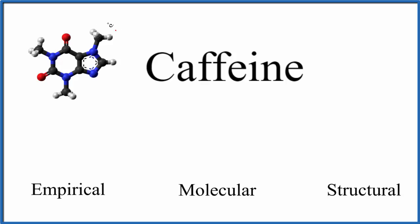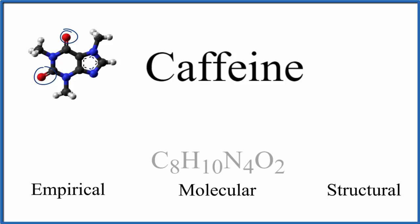Here's a model of the caffeine molecule. The black atoms are the carbons, the blue are nitrogen, red are oxygens, and white are hydrogens. If we count all of those up — for example, the two oxygens — this is what we'd get for the molecular formula: C8H10N4O2. There are our two oxygens, and you can count up the other atoms as well.